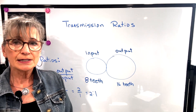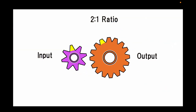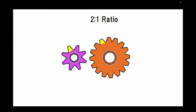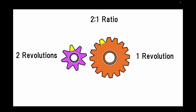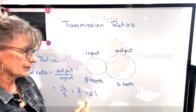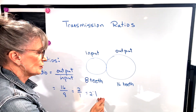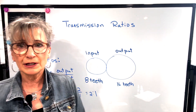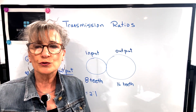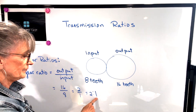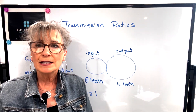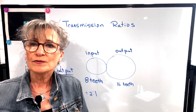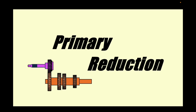That ratio tells us that our input gear is turning 2 revolutions for every 1 revolution of the output. When working with transmission ratios, you want to always express them to 1. In this case it worked out to an even number, but it typically won't, so you want to round off to 2 decimal places.